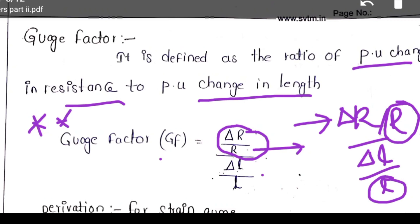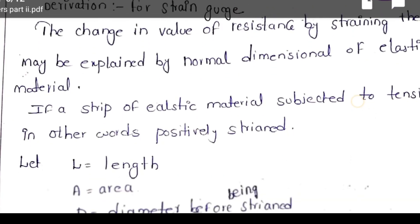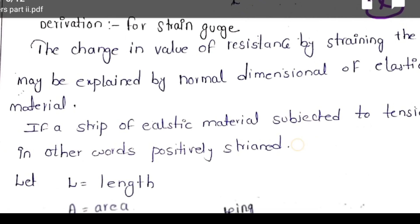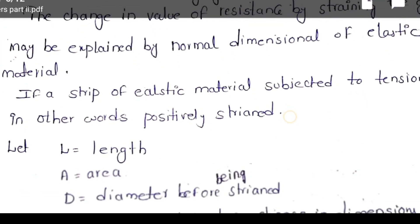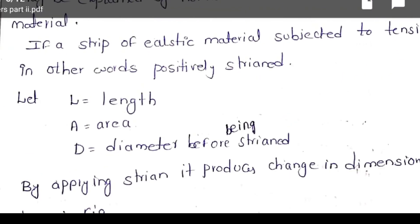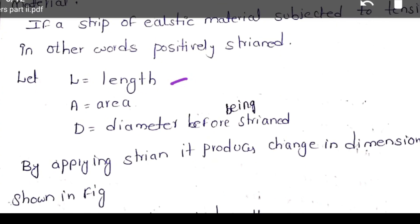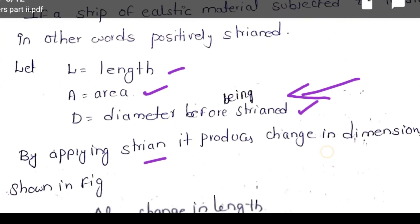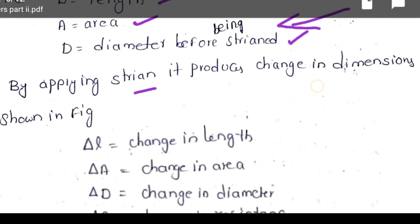The derivation for strain gauge, which is a very important topic, concerns the change in value of resistance of the strain gauge. Normally, the strain gauge original length is L. We assume that L is the length of the strain gauge, A is the area of cross-section, and D is the diameter before being strained. Before applying the force, the diameter is D. By applying force or strain, it produces a change in dimensions.